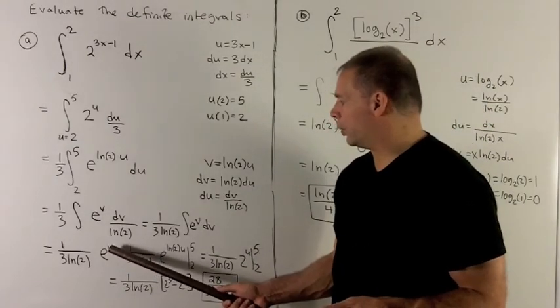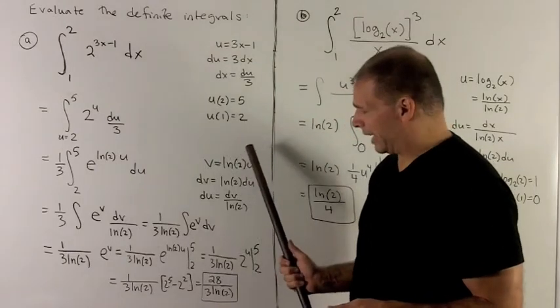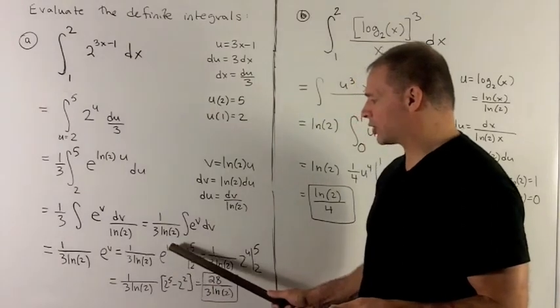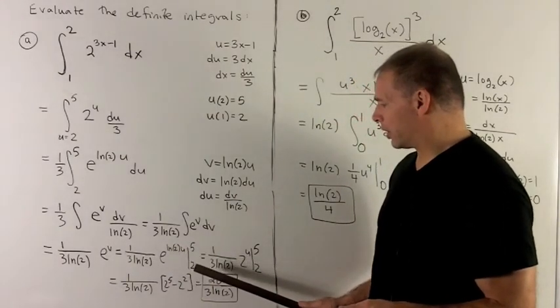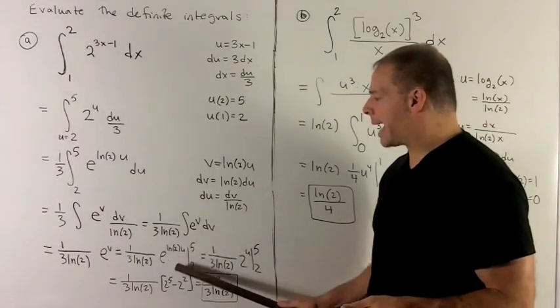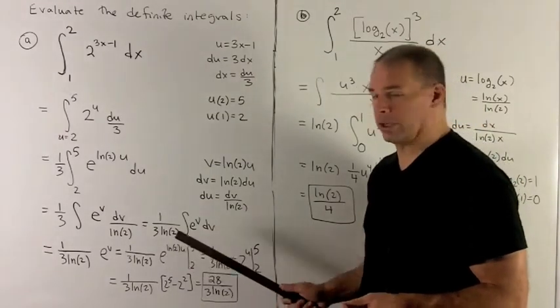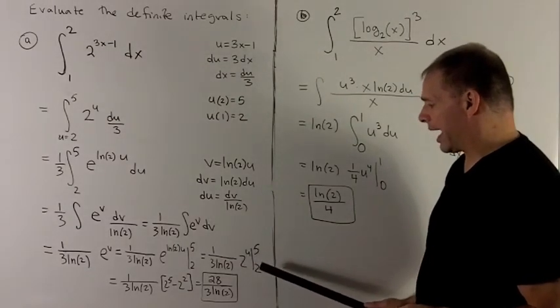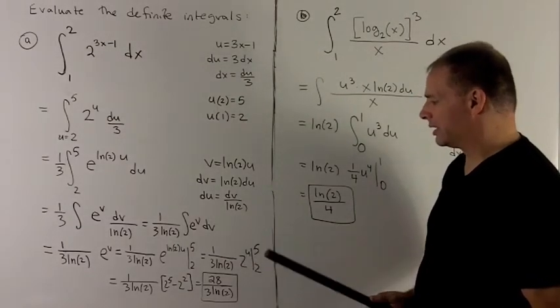And now I'm going to put my u back in. So I'm going to have 1 over 3 natural log of 2, e to the natural log of 2u. We have our old limits in u, 2 to 5. So this is going to collapse now back into 2 to the u. And all I need to do now is evaluate at 5 and 2 and take the difference.